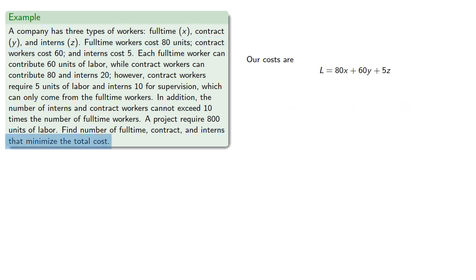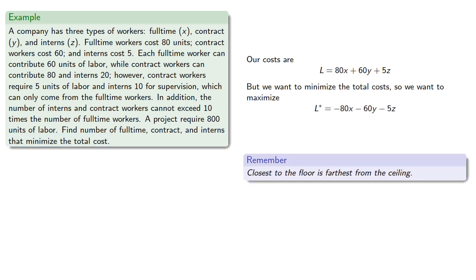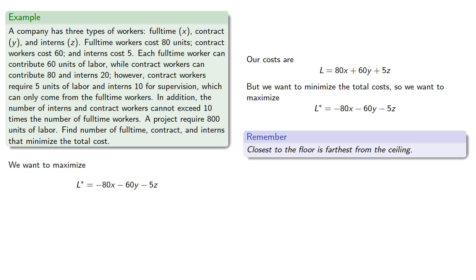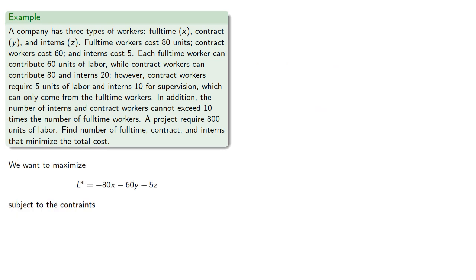But we want to minimize the total costs, so we want to maximize the negative of the cost. Remember, closest to the floor is farthest from the ceiling. Next, we want to identify our constraints.